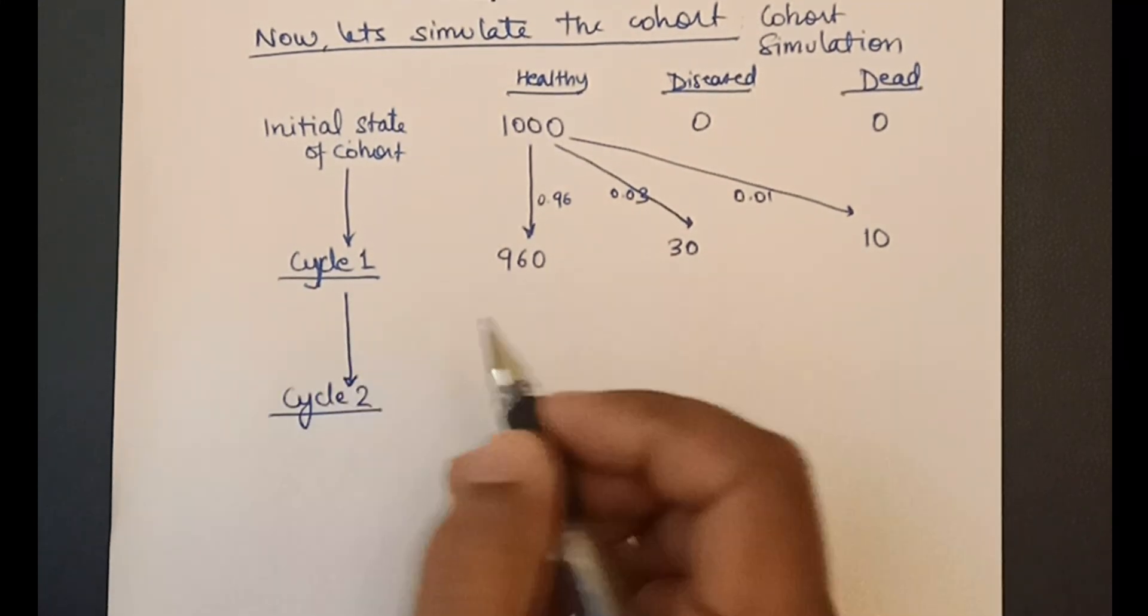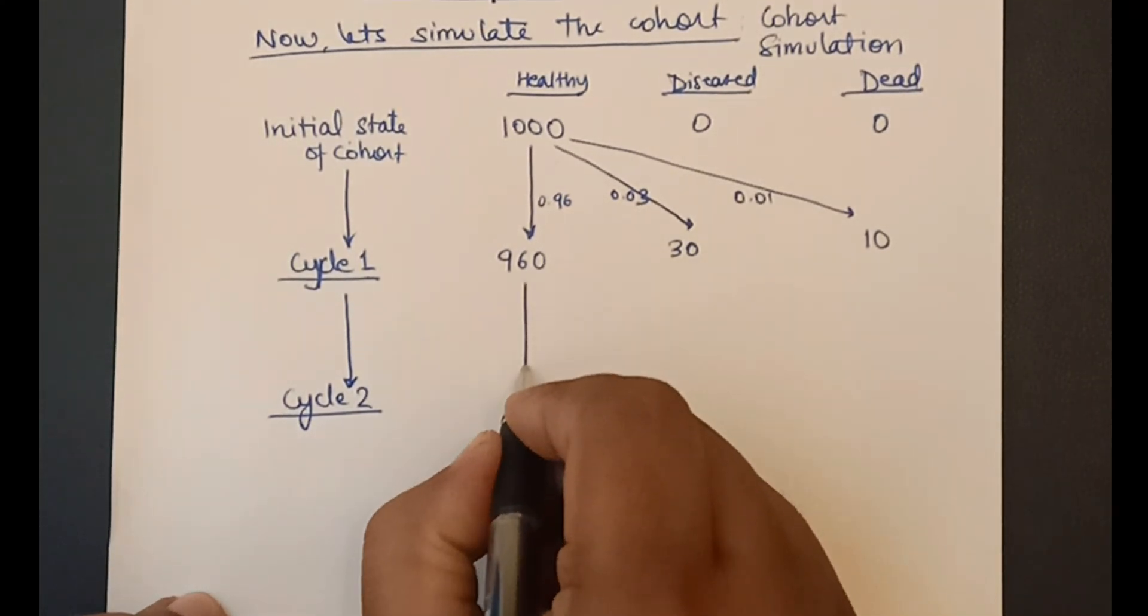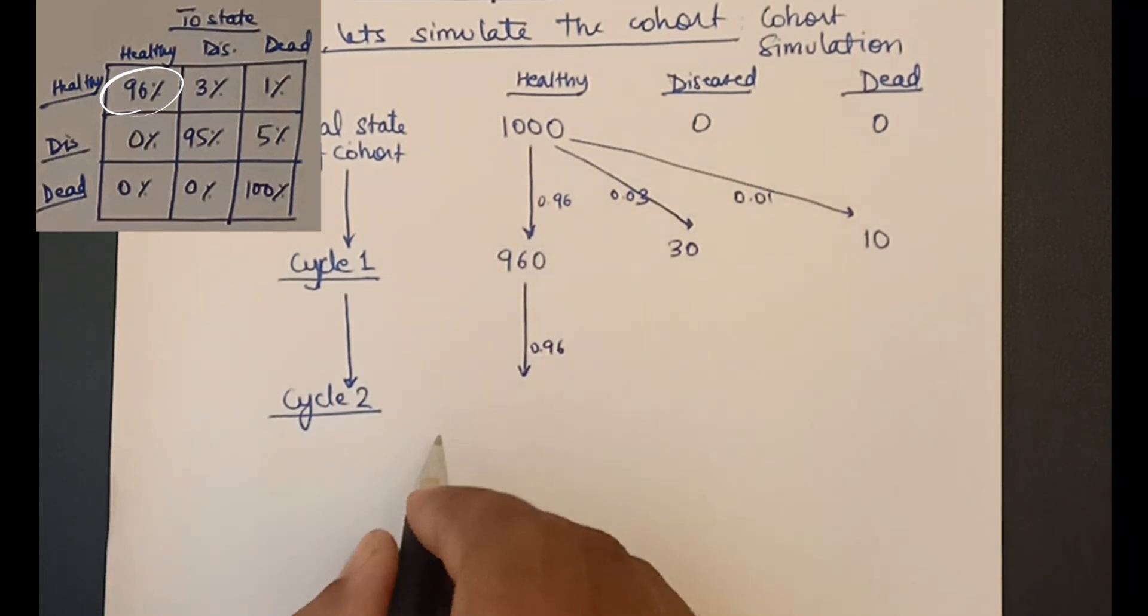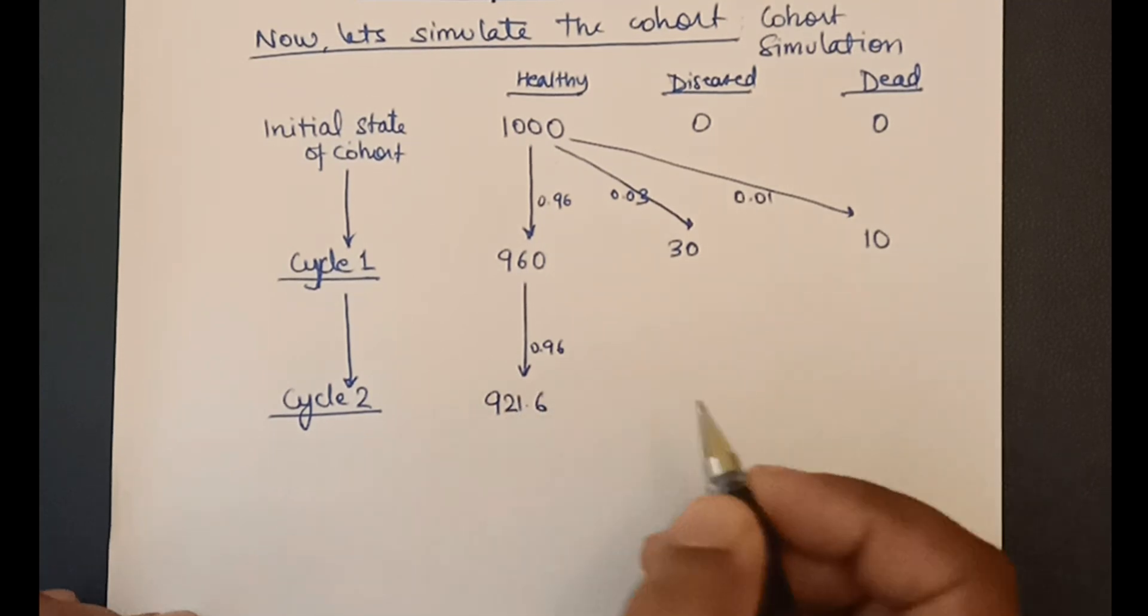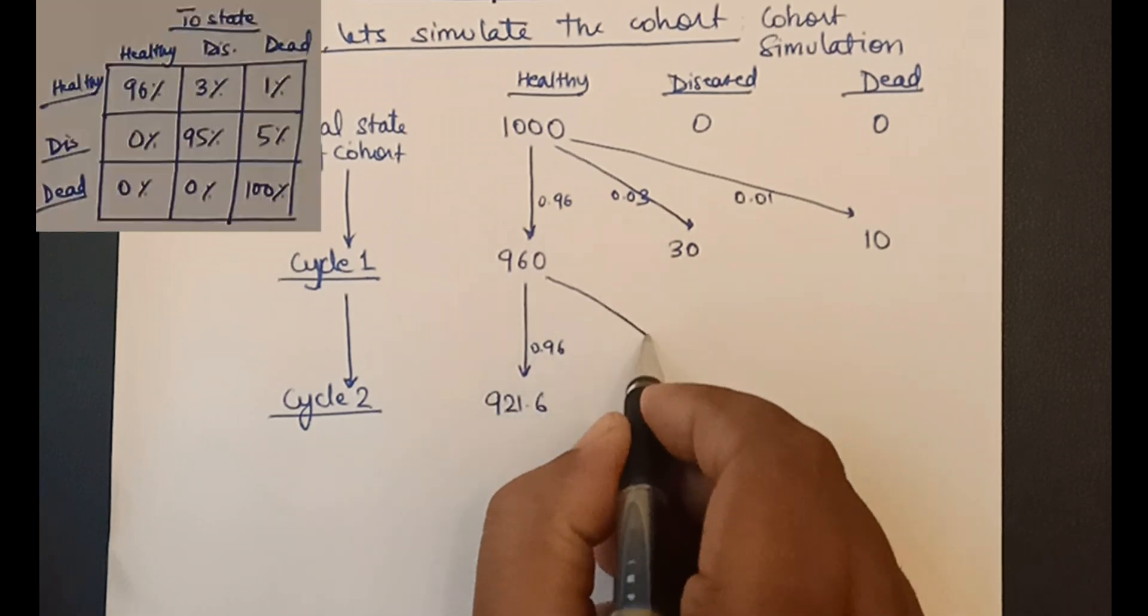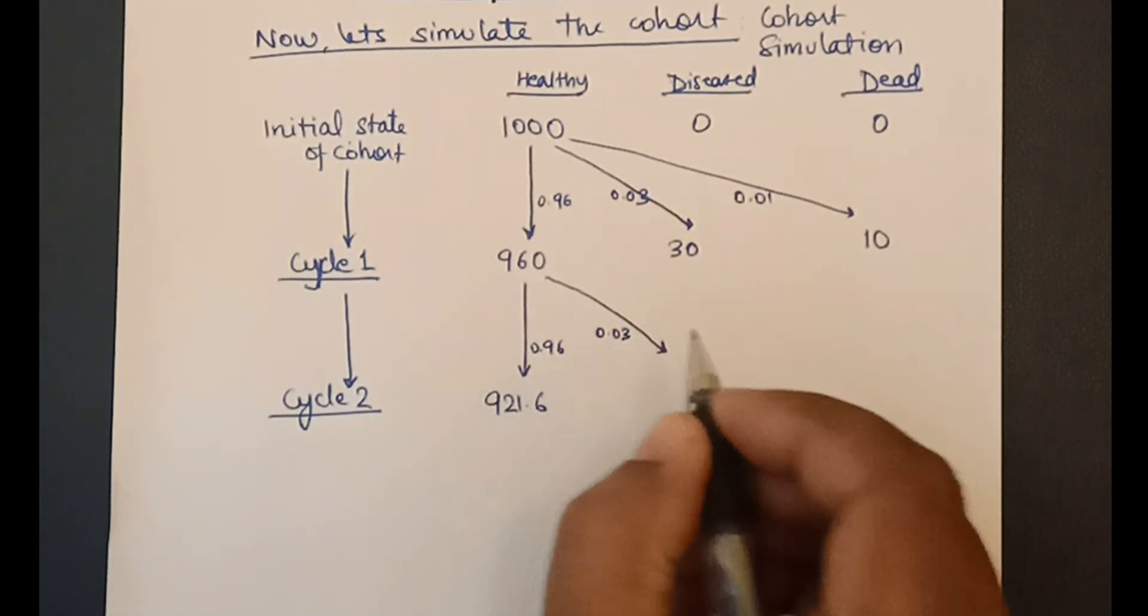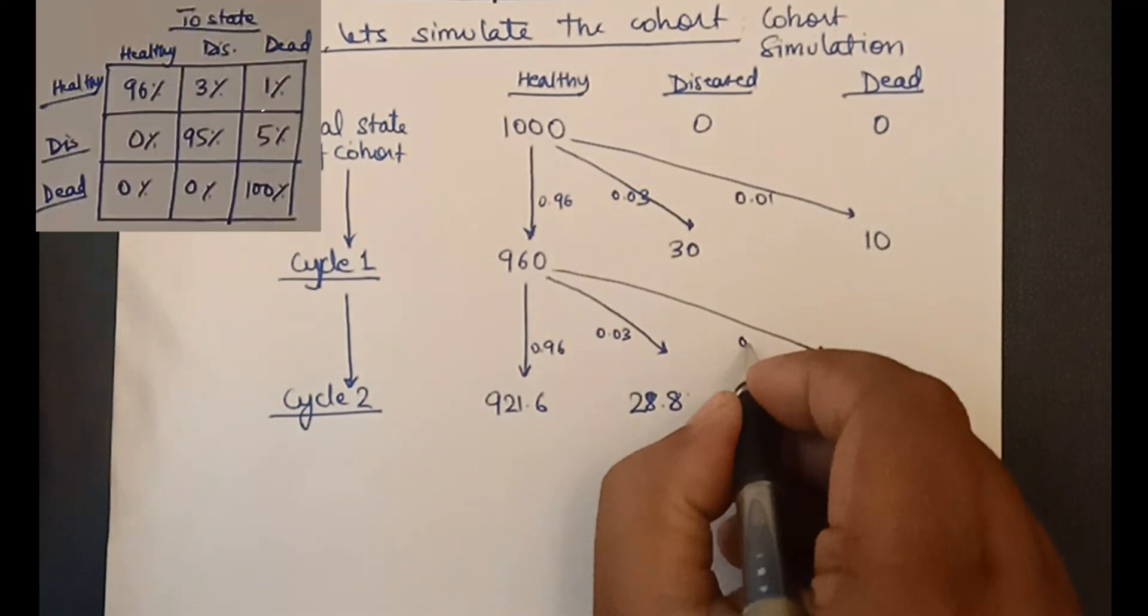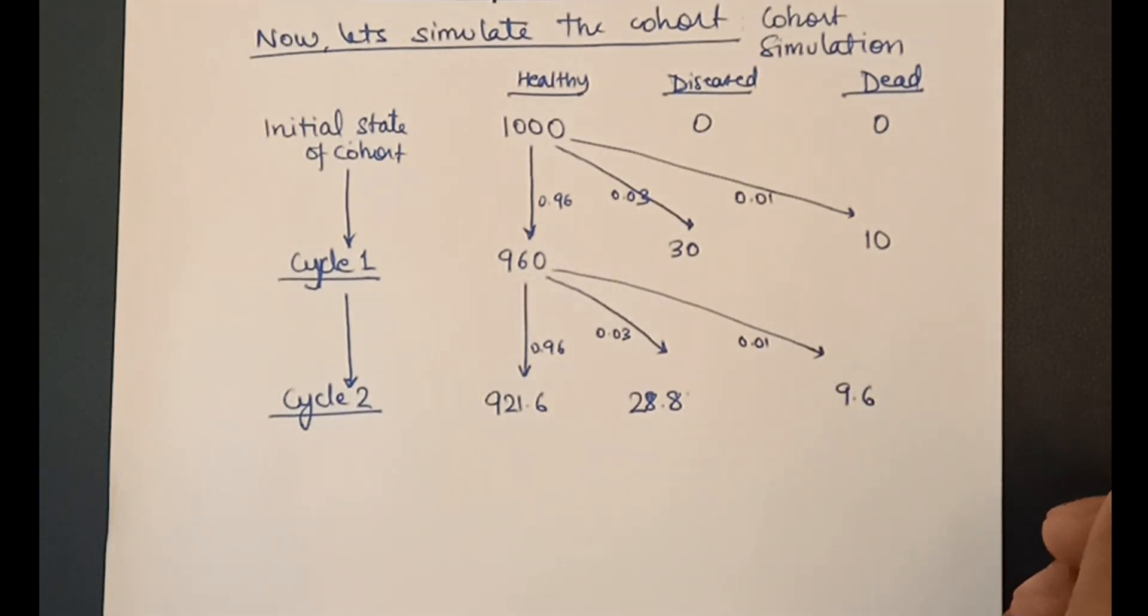Now, let us try to understand cycle 2 which is a bit complex. We have 960 people in the healthy state and there is 96% chance that they will remain in the healthy state. So 960 multiplied by 0.96 gives us 921.6. From healthy to diseased, there is 3% chance. So 960 multiplied by 0.03 gives us 28.8. For healthy to dead, we multiply 960 by 0.01 and we get 9.6.